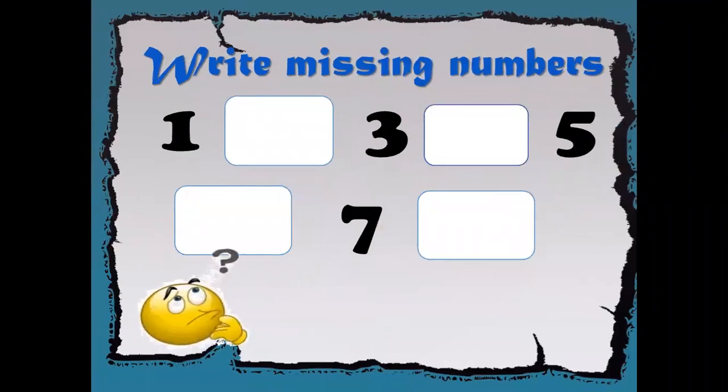So in this way, you have to learn numbers 1 to 20. Now next is write missing numbers. So kids, 1, 3, 5, 7 is given. So we are going to start from number 1. You need to write missing number here.